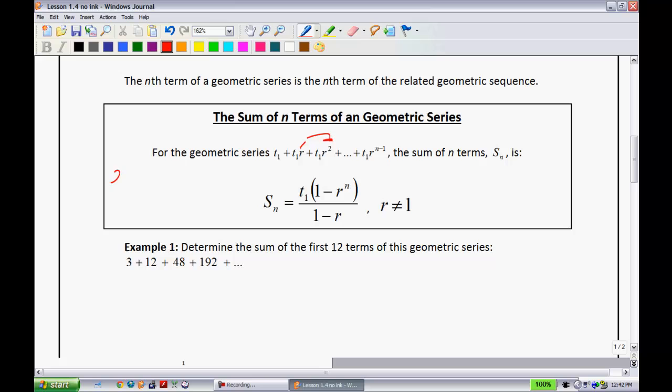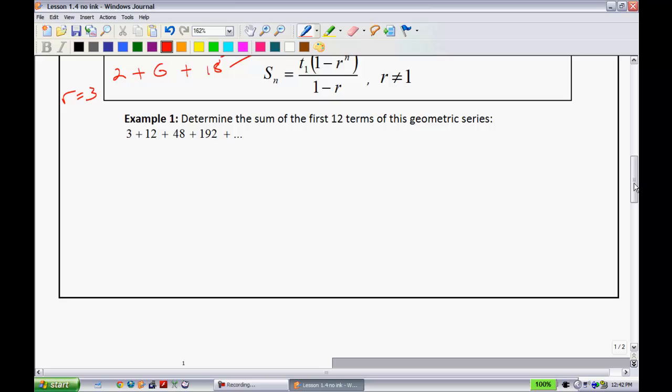For the geometric series T1 plus T1R, all this means is that I'm just taking the first term and I'm multiplying it by the common ratio, and then I do it again, multiply it by the common ratio again, that's why it gets to R squared. Let me show you what I mean. Let's say the first term was 2, and we're going to have a common ratio of 3. To get the next term, we would multiply it by 3. So the next term would be 2 times 3. And the term after that, I have to take it and multiply it by 3 again, or I can just go 3 squared. So we'd have 2 plus 6 plus 3 squared is 9 times 2 is 18. So that's where that notation comes from.